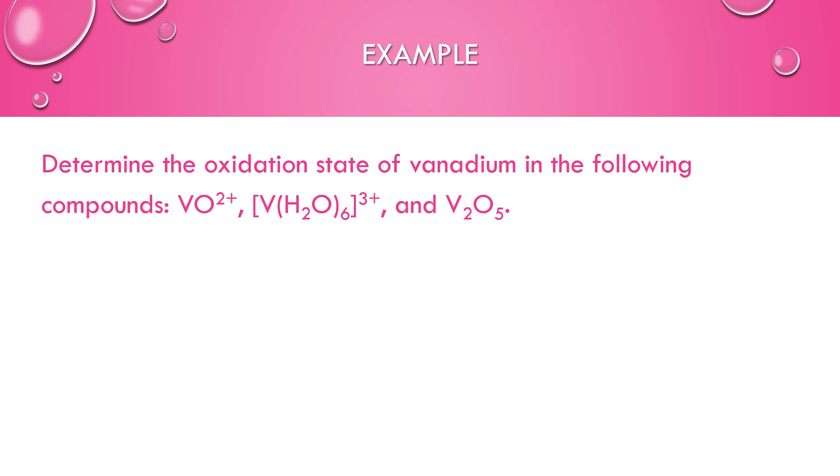For this example question, we need to determine the oxidation state of vanadium in each of the following. In this one, oxygen is negative 2 in compounds, and we need it to be positive 2 overall. So the vanadium must be plus 4 to cancel out the oxygen and wind up being plus 2 overall. In our complex ion here, remember water is neutral overall. So 0 times 6 is still 0. That means the vanadium must be supplying all of that plus 3, so plus 3 oxidation state for vanadium. In this case, this is just an ionic compound, it's got to add up to 0. Oxygen is negative 2, so it's negative 10 total. The two vanadiums have to add up to positive 10. Each one is positive 5. You can see those different oxidation states for that transition metal vanadium.